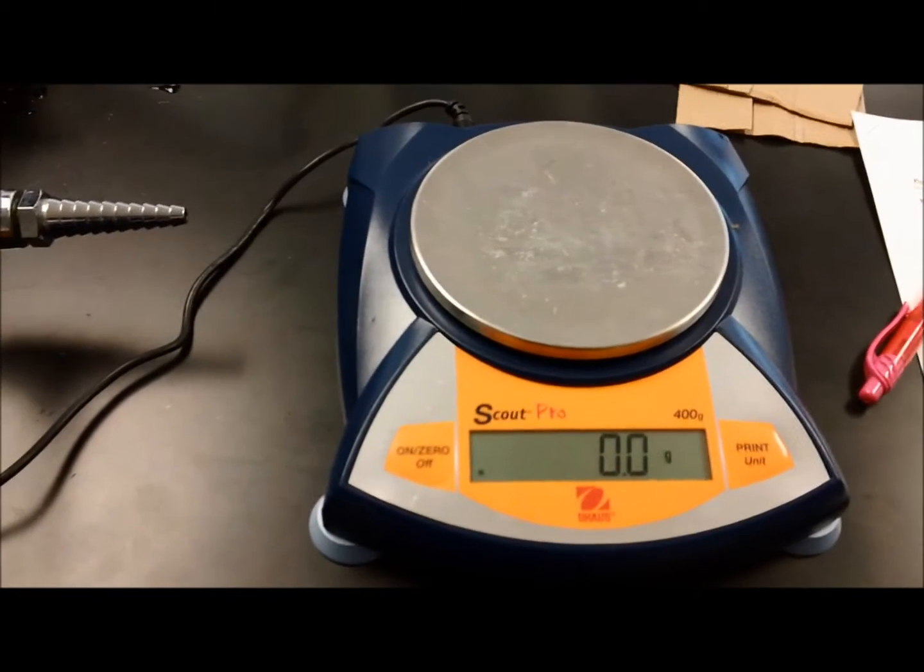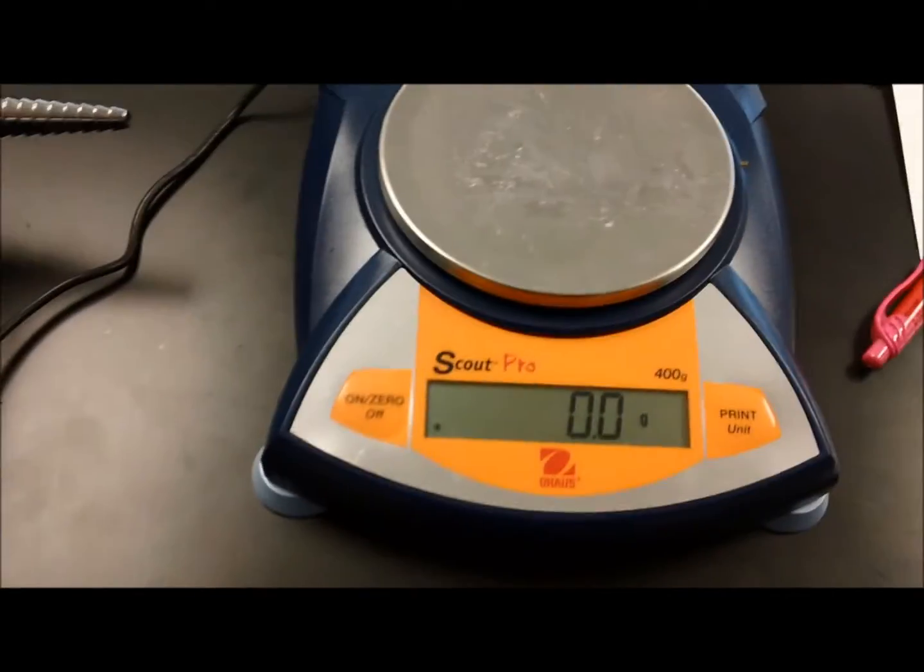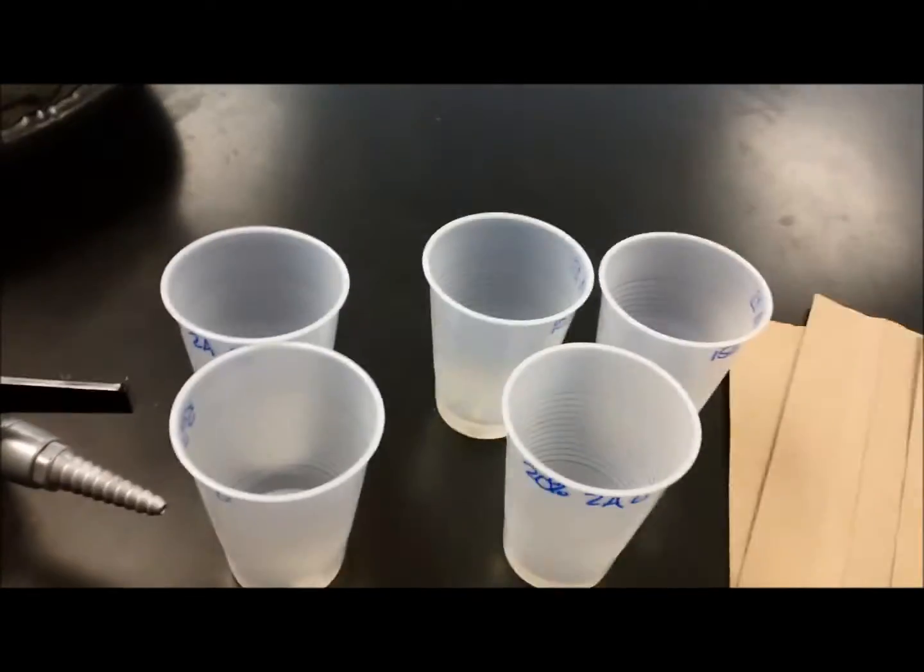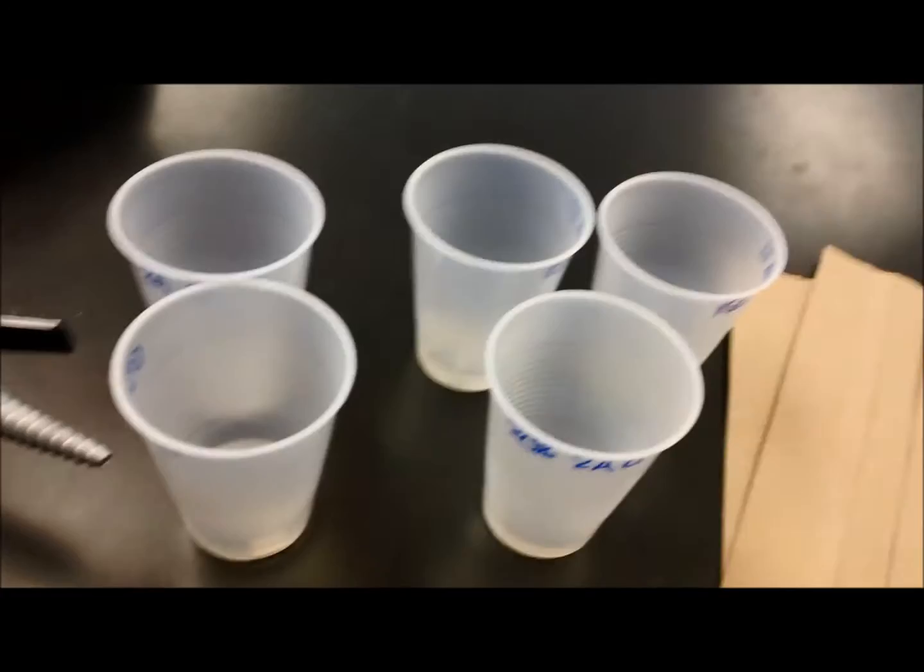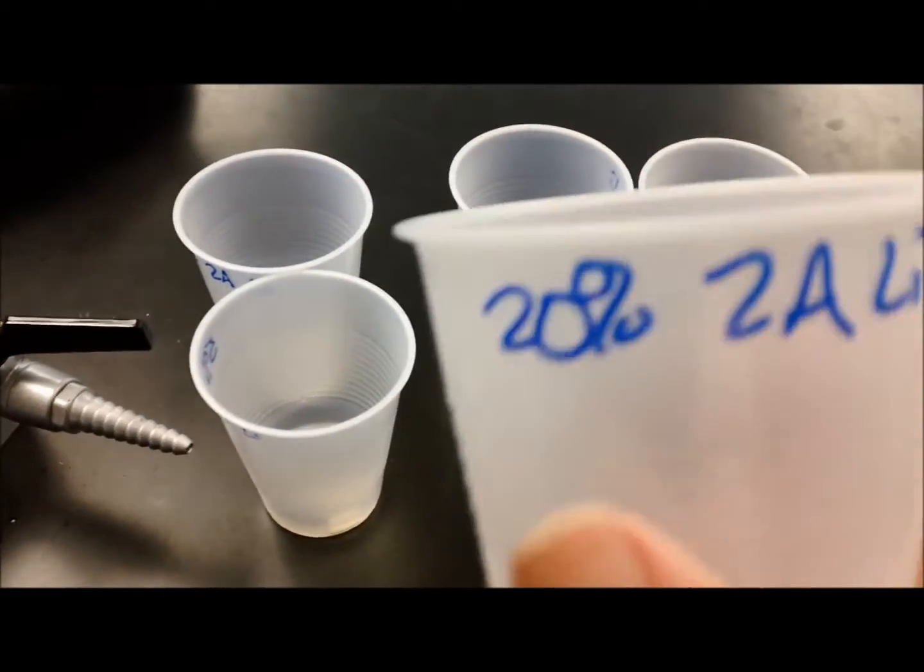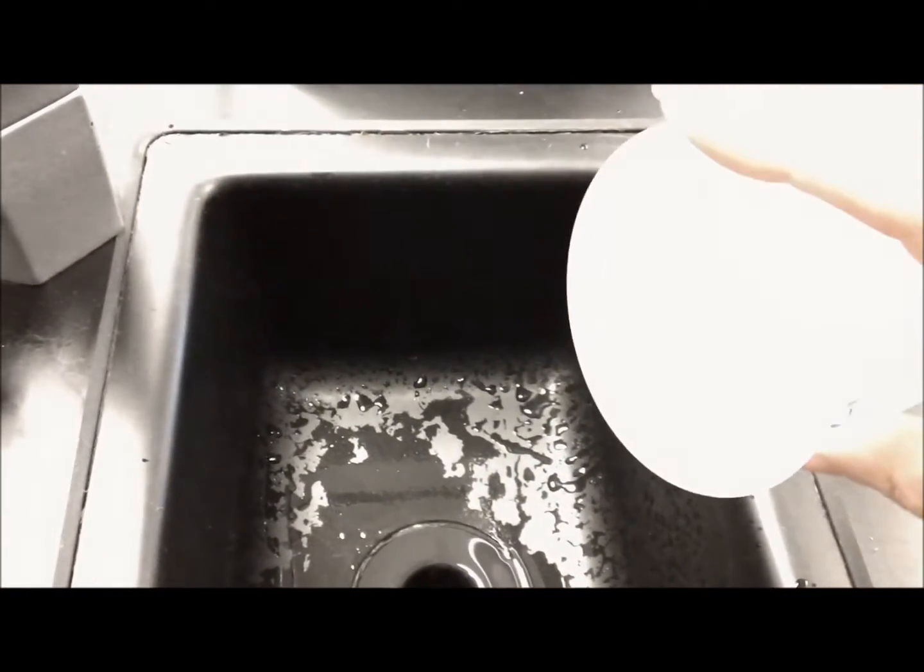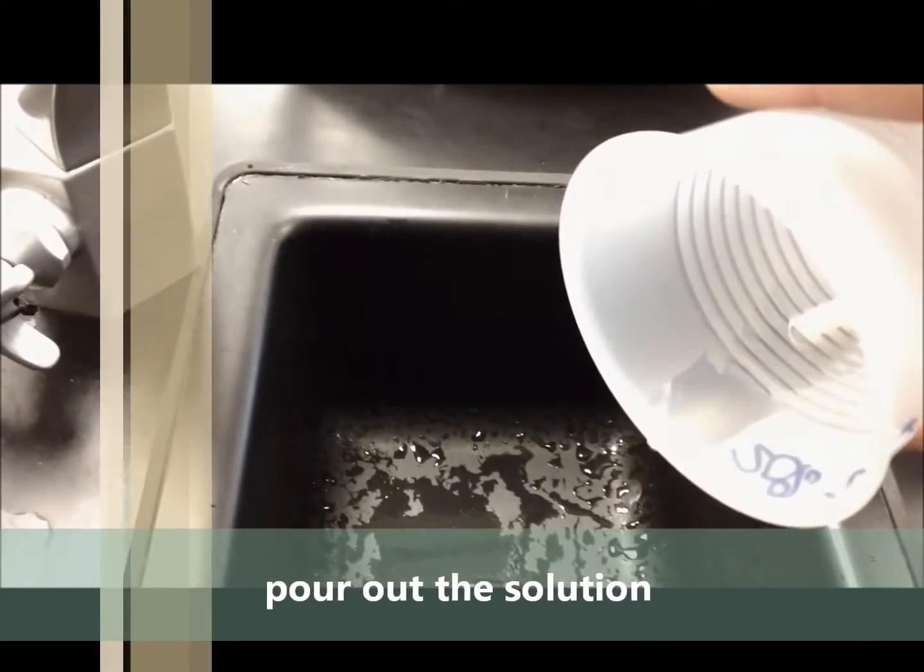For part two of the lab, you will need your initial data, a scale, and your five solutions with the potato pieces in. To start, choose one of the solutions. We're going to start with the 20% and carefully pour out the solution. We don't want any of our potato pieces to end up in the sink.